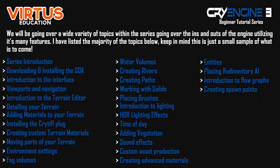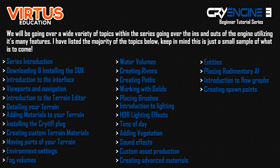I'll show you how to use some of the preset materials that come with the engine to quickly paint them onto your terrain — adding grass, sand, rock, or whatever you want. Next, I'm going to show you how to install the Crytiff plugin for Photoshop, since CryEngine doesn't allow you to just import PNGs — you need the plugin to export textures into the Crytiff format. After that, we'll cover how to create custom terrain materials using textures created with the Crytiff plugin.